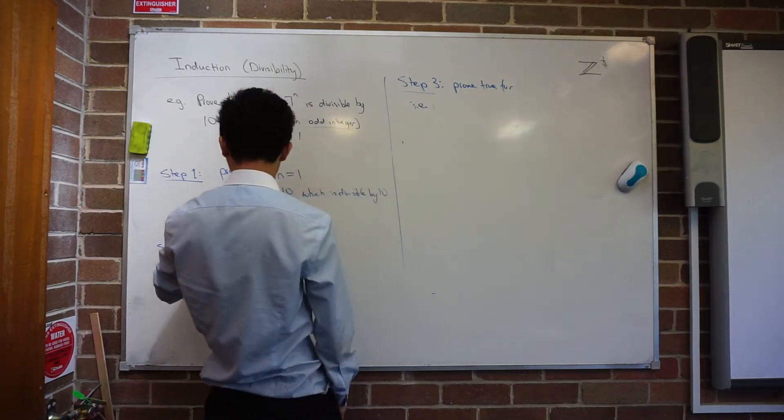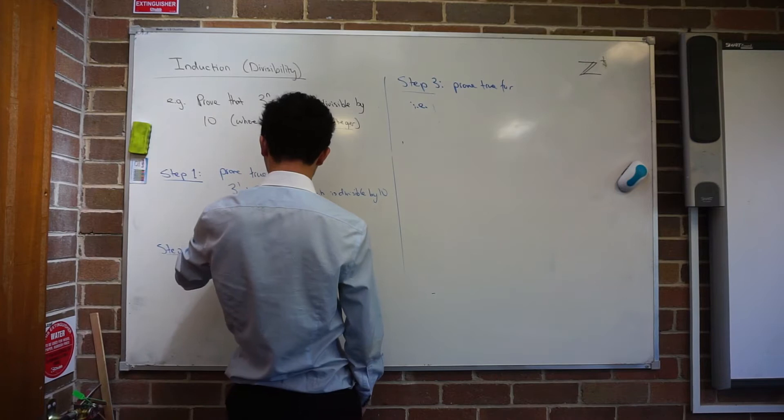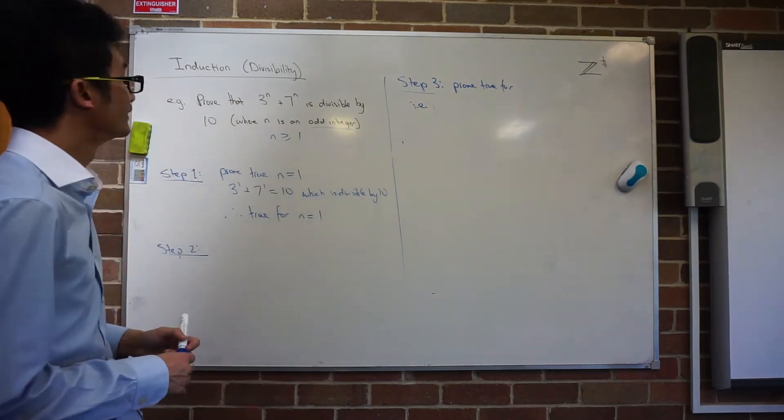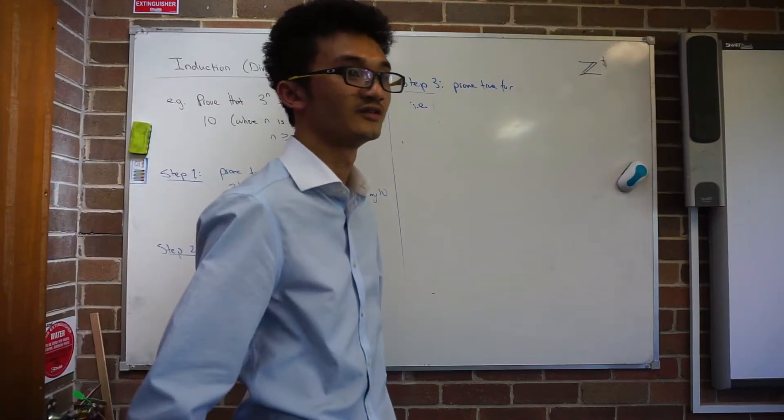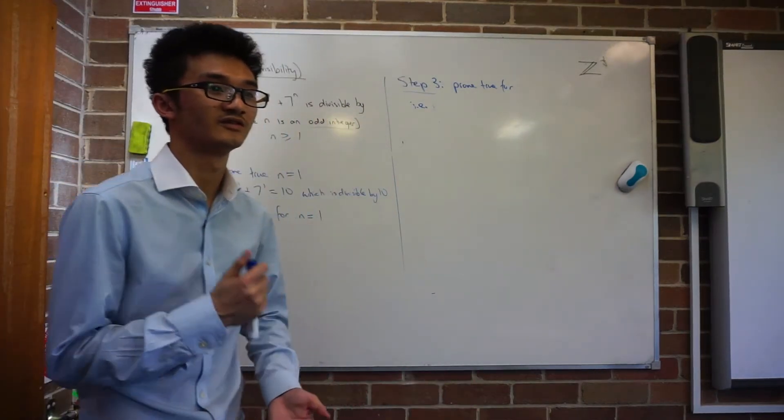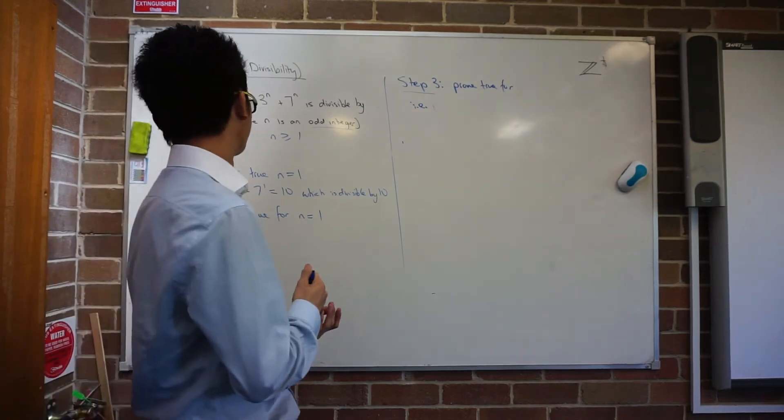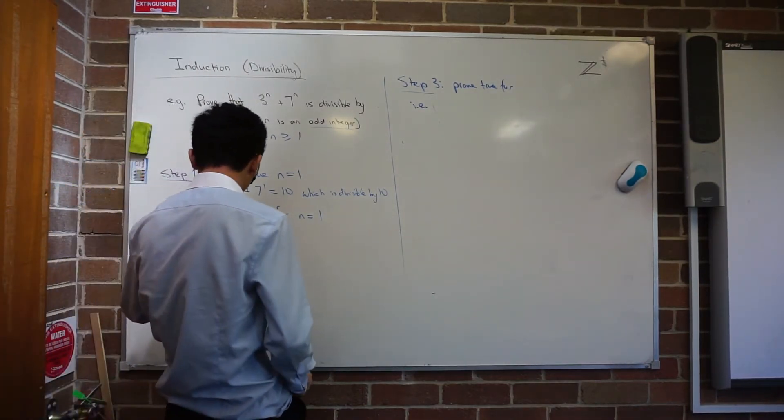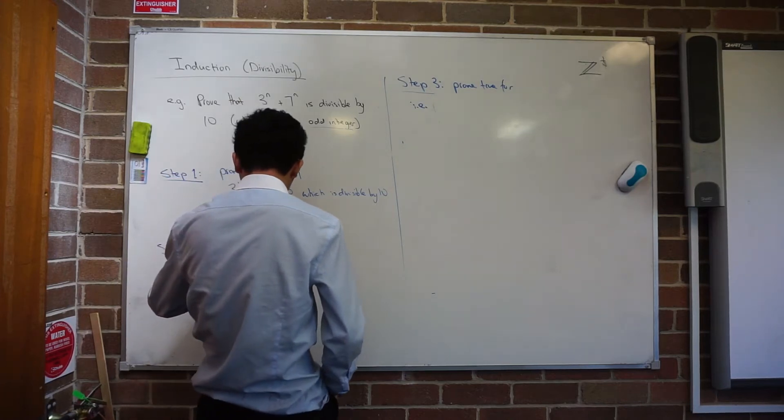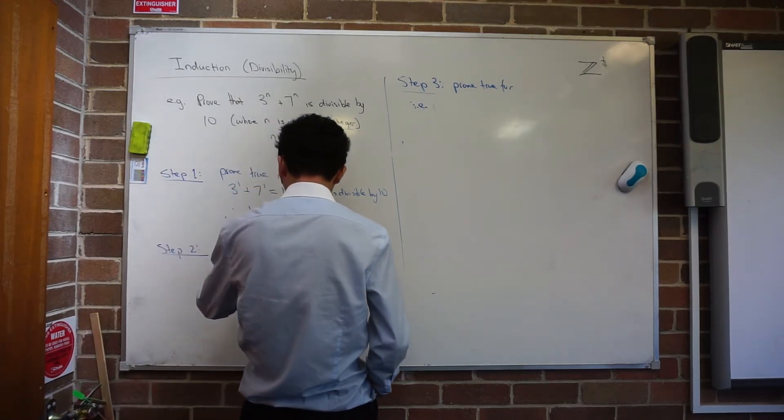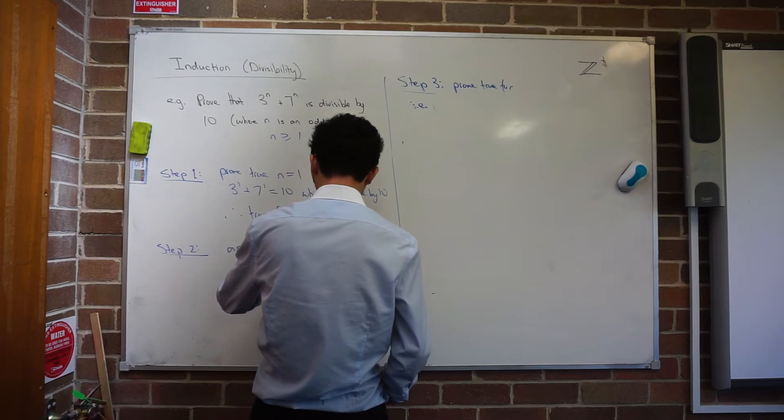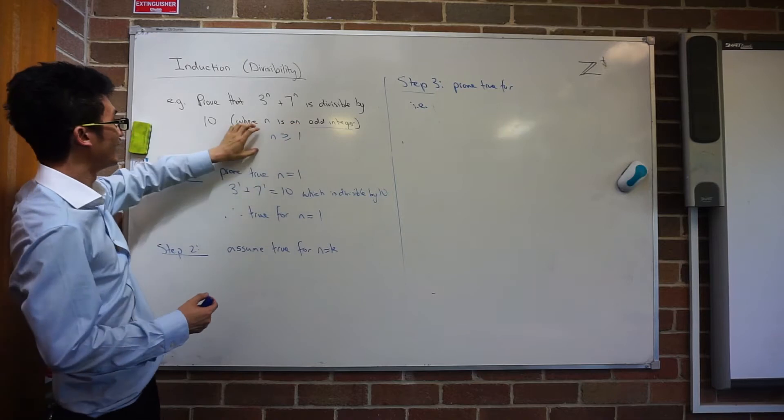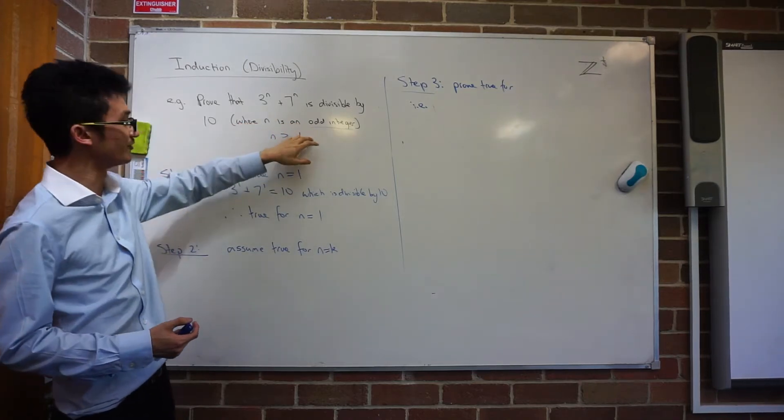So in this case, you notice our previous question had like k over 2. So this would be possibly a whole k? Yeah. So when we're assuming true for n equals k now, can you tell me what kind of value is that k going to be? It's going to be... Because I know that n is an integer, it's a special type of integer.